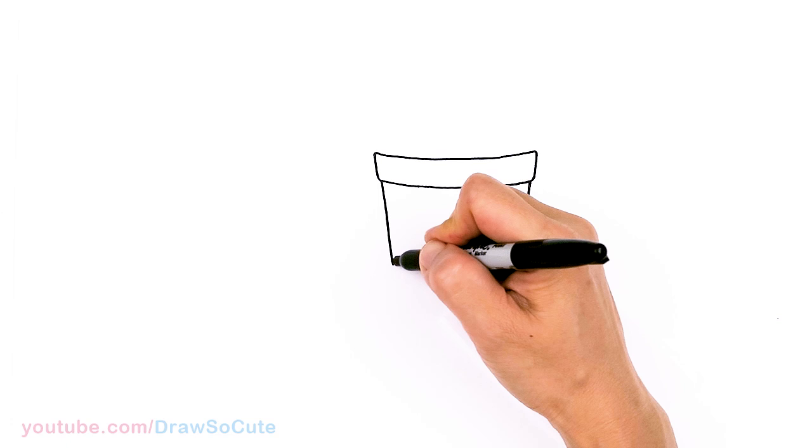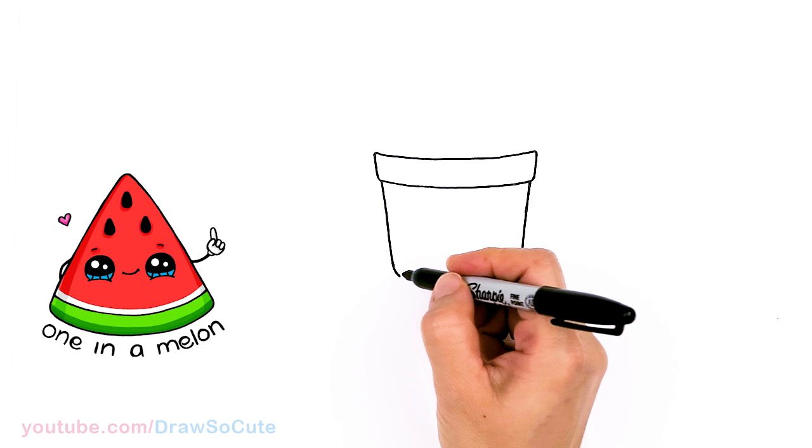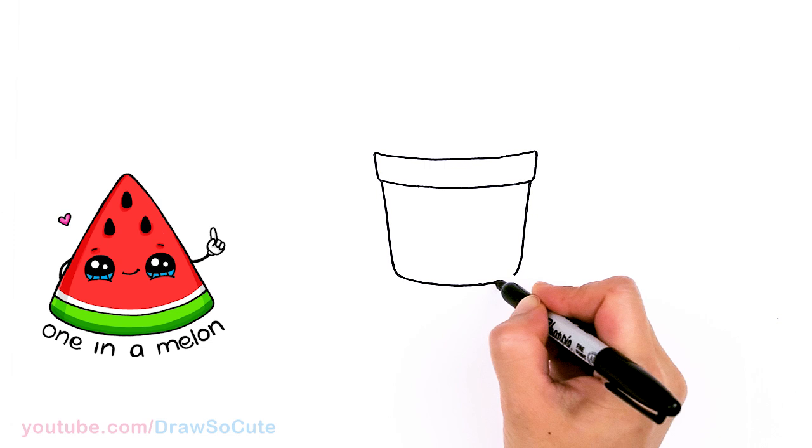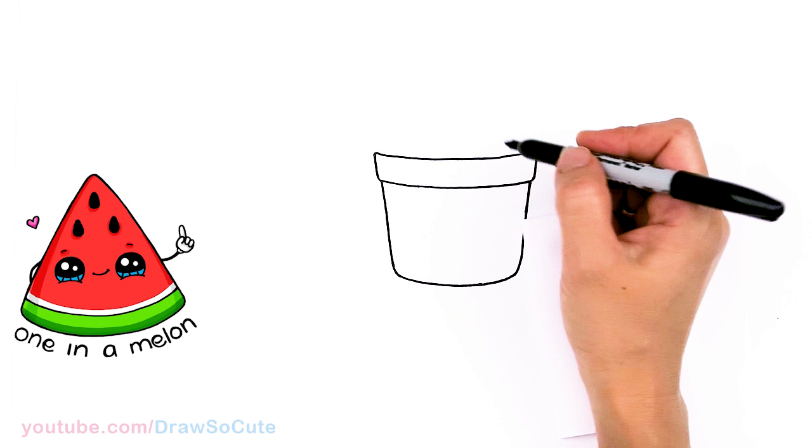So I'll say about that much and then I'll start to round off the bottom and connect with a curve. There, so I have a basic pot in.